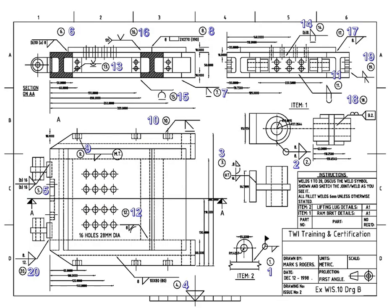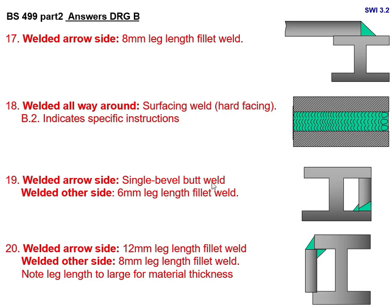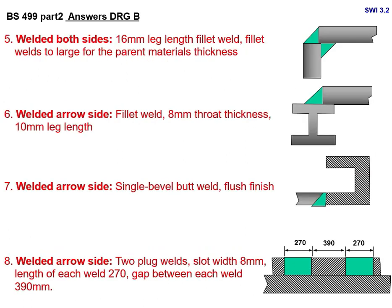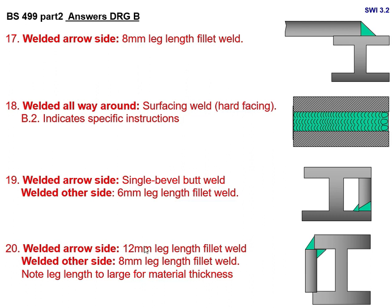Joint number 19: welded other side — single plug/slot butt weld; welded arrow side — 6 mm leg length fillet weld. One side is the single butt weld and the other is a 6 mm leg length fillet weld. Joint number 20: one side is 12 mm leg length fillet weld and the other side is 8 mm leg length fillet weld. Note that the leg length is too large for the material thickness — this should be commented on.